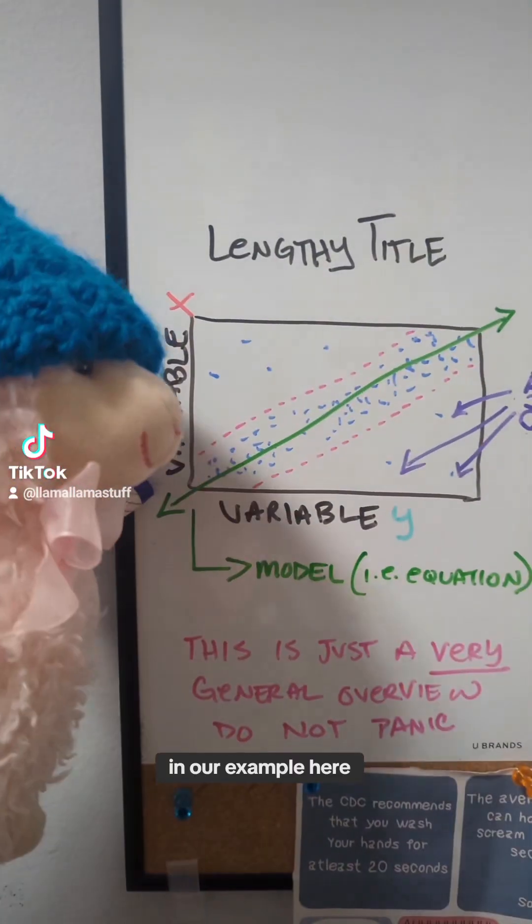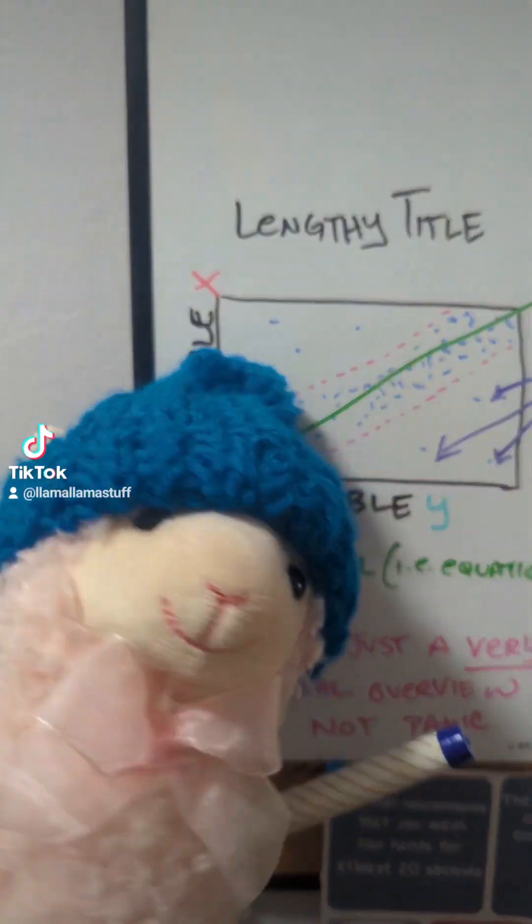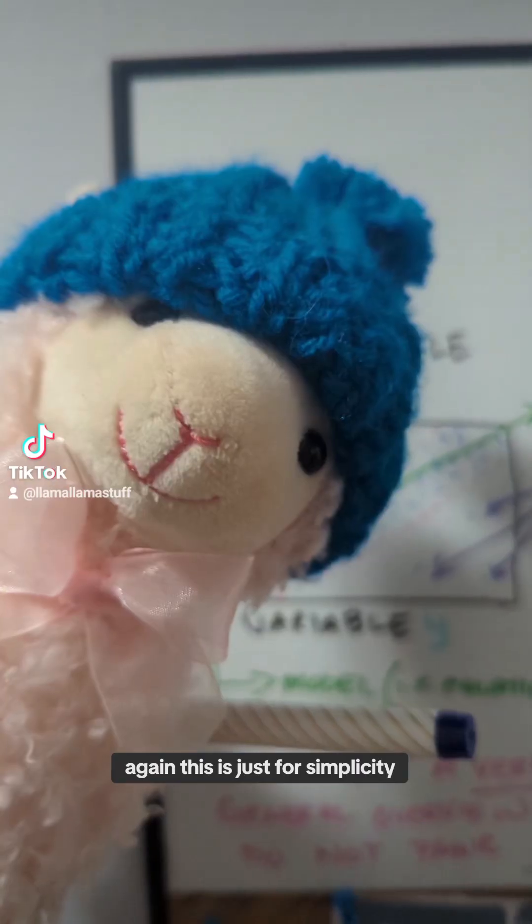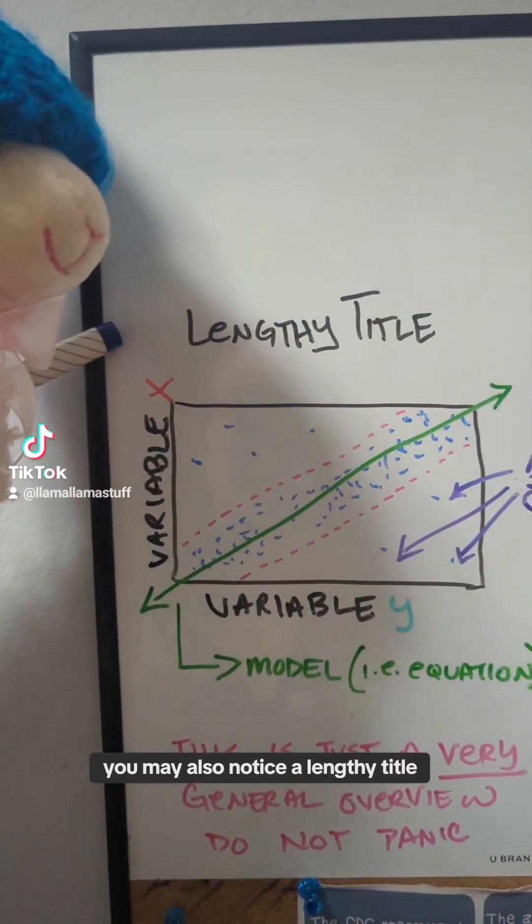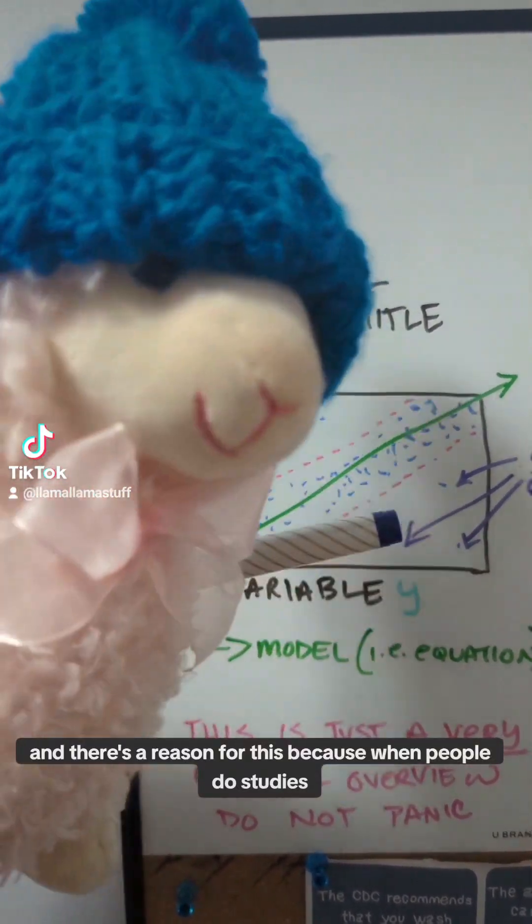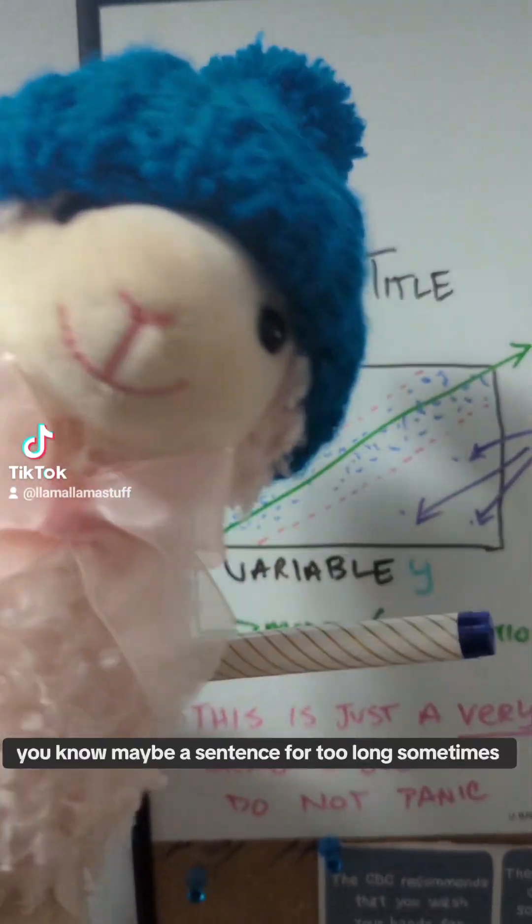In our example here, we see that we have variable x, variable y. Oftentimes, in a lot of different studies, you will have multiple variables. This is just for simplicity. You may also notice a lengthy title, and there's a reason for this because when people do studies, usually they try to be very specific, so it'll end up being, you know, maybe a sentence too long sometimes.